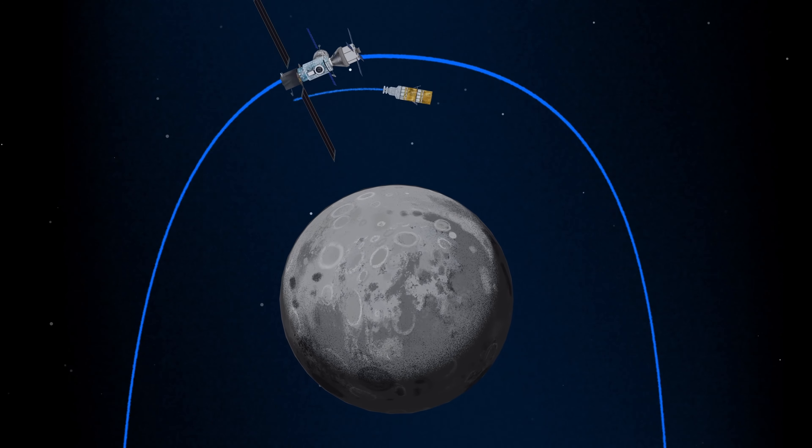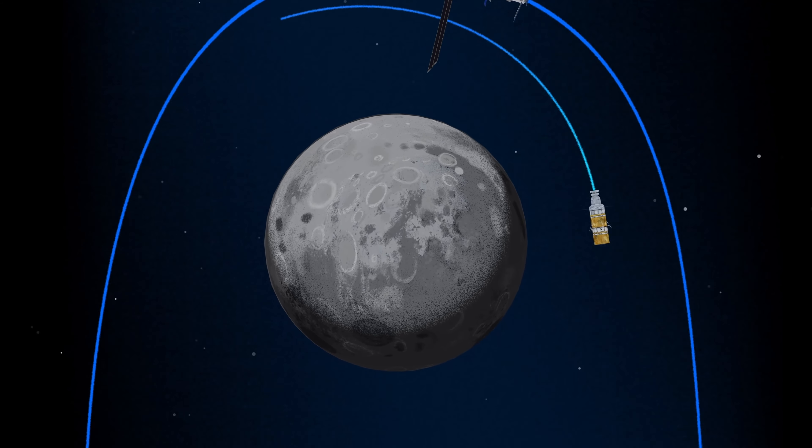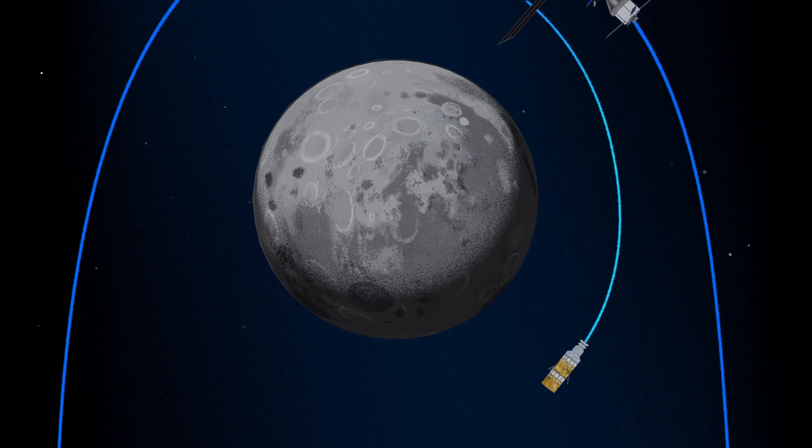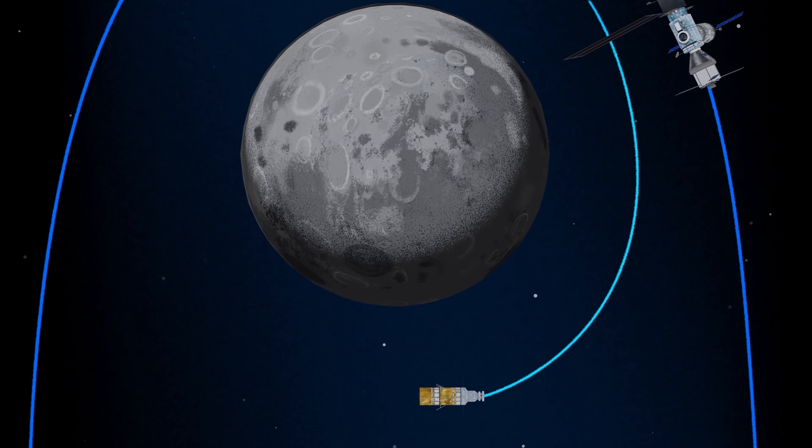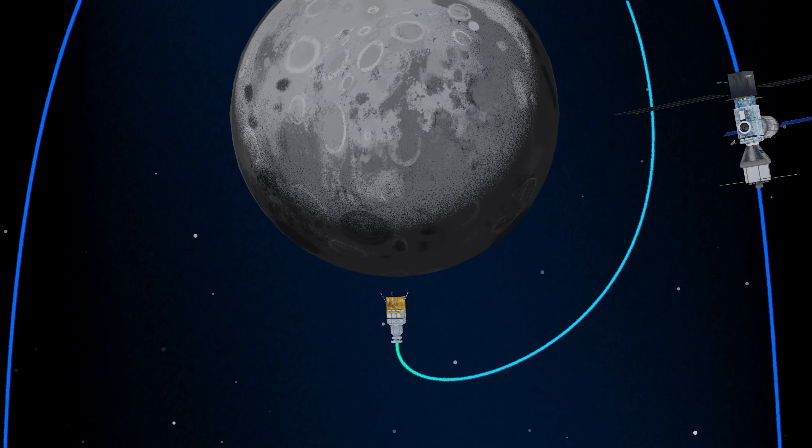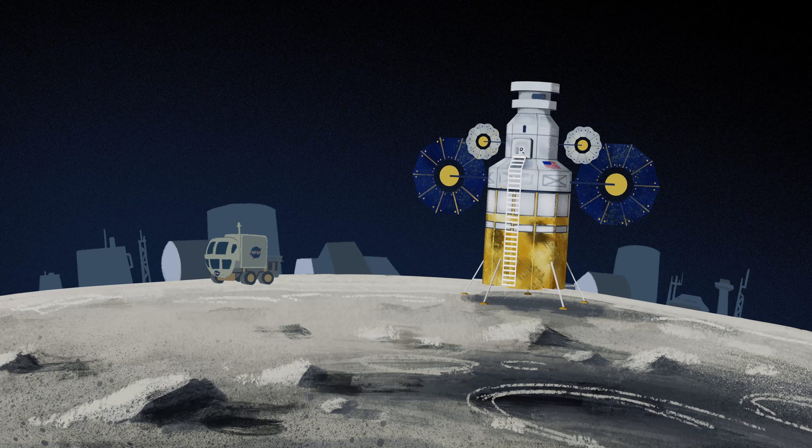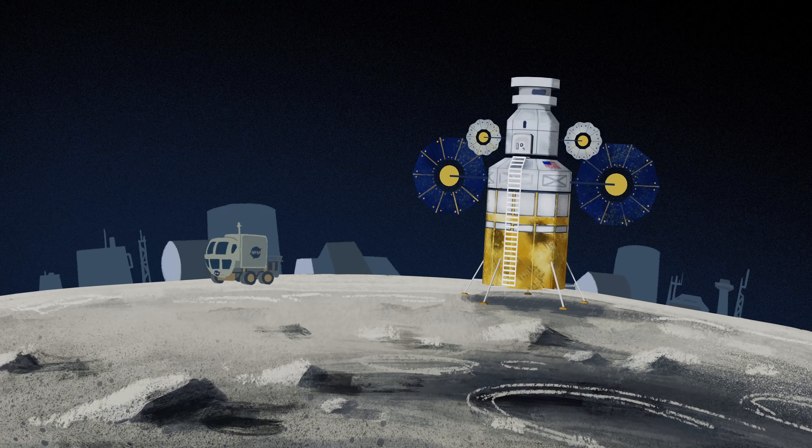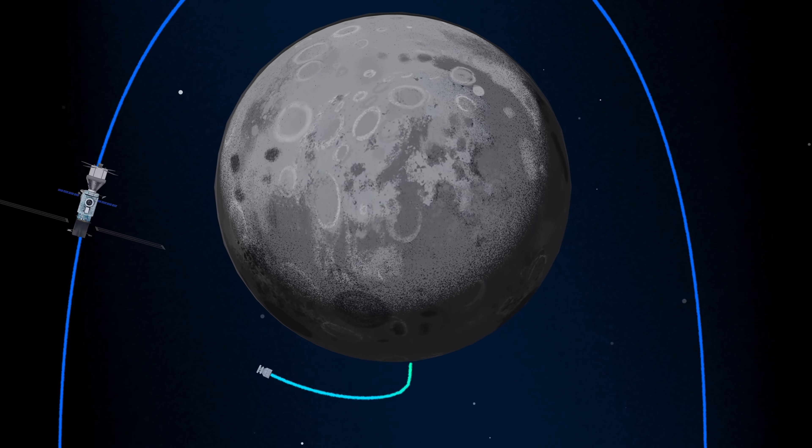The lunar lander system itself is built for three unique steps: descending from the halo orbit of Gateway down to a low lunar orbit, descending from low lunar orbit to the surface, and once the lunar mission is complete, launching from the surface of the Moon and ascending all the way back to the orbiting Gateway.